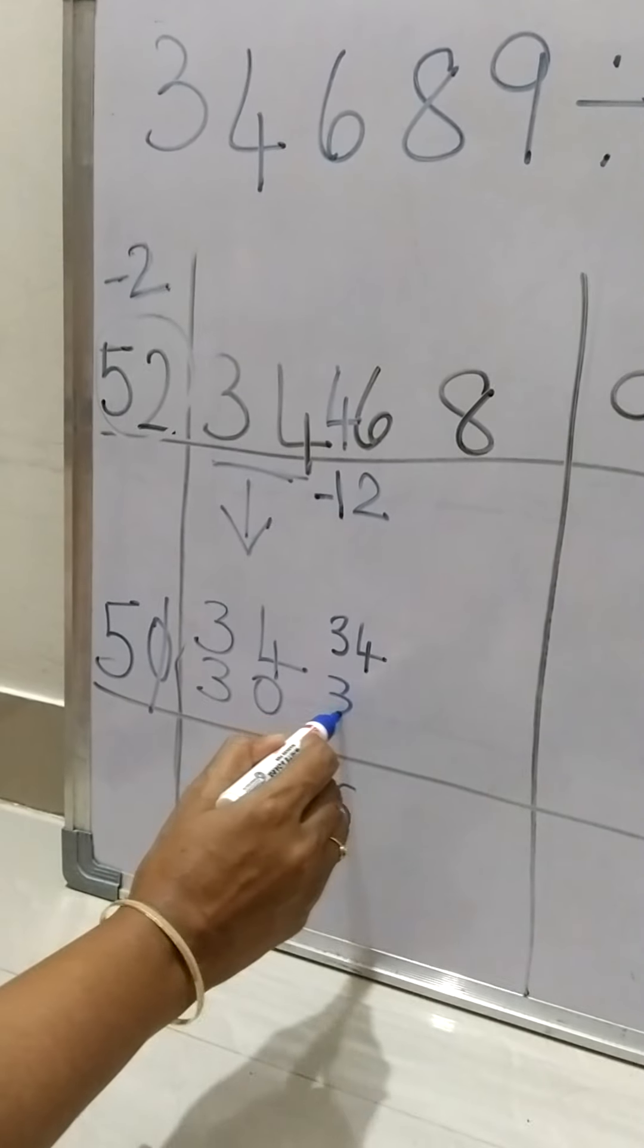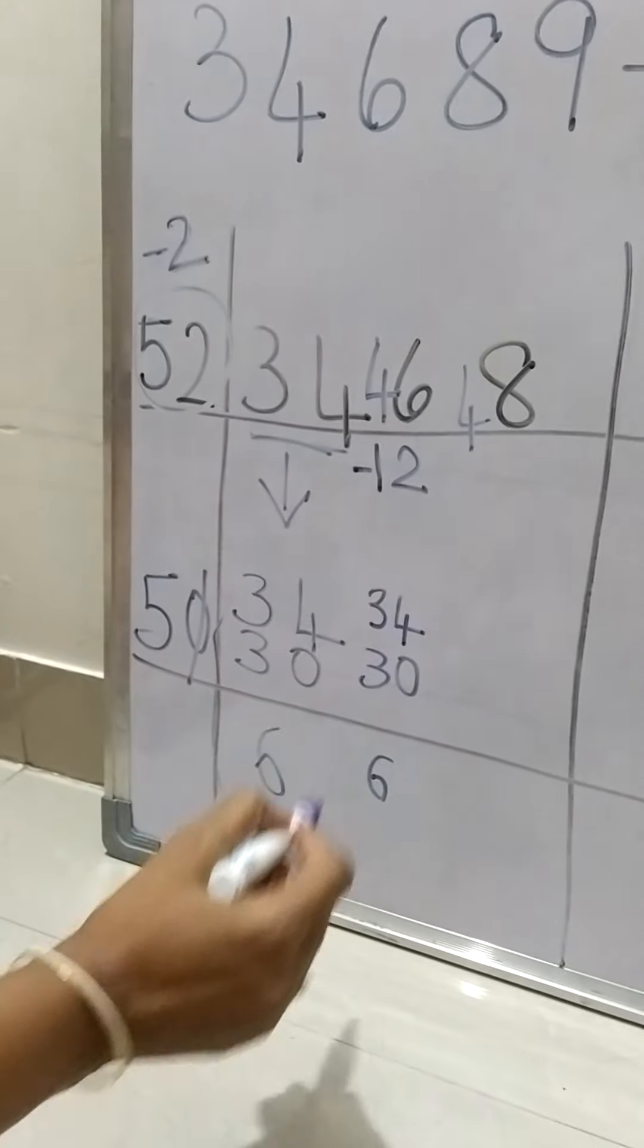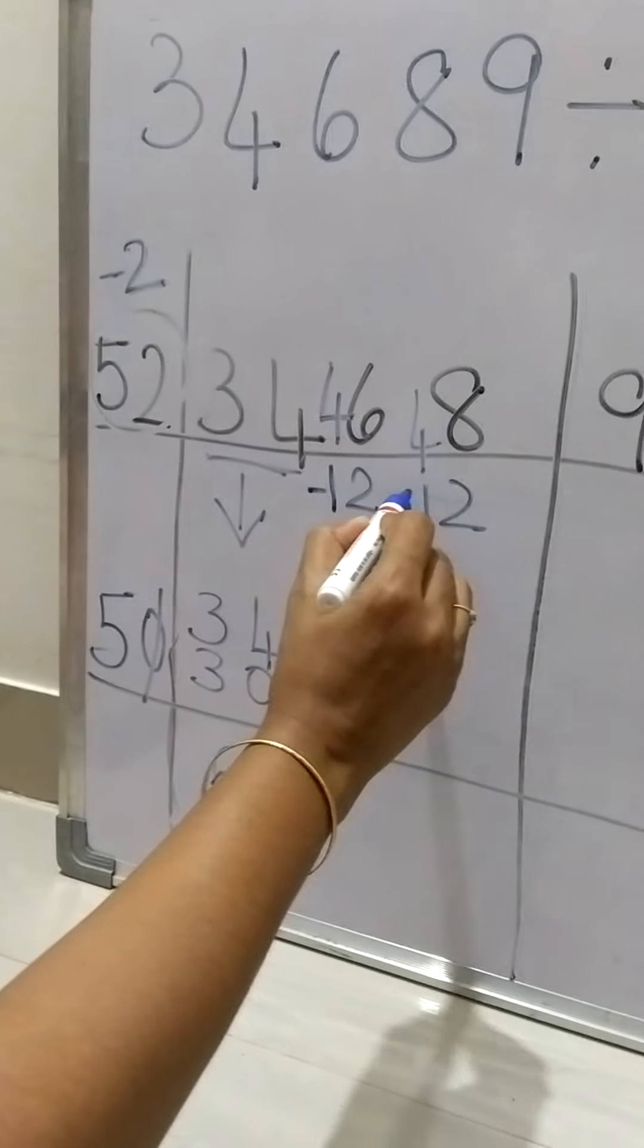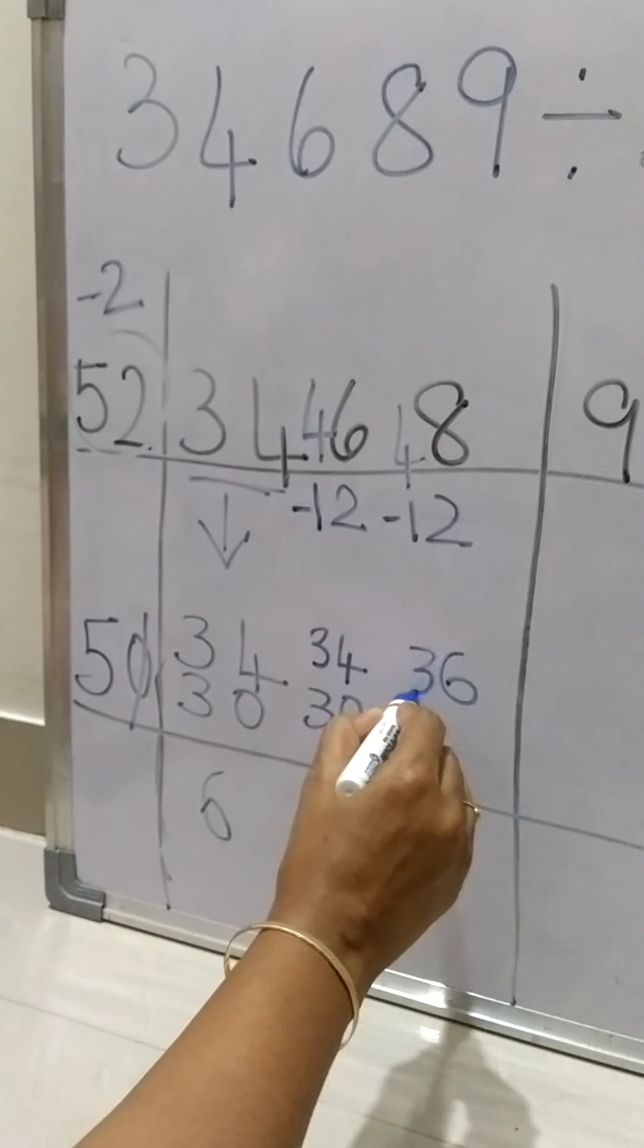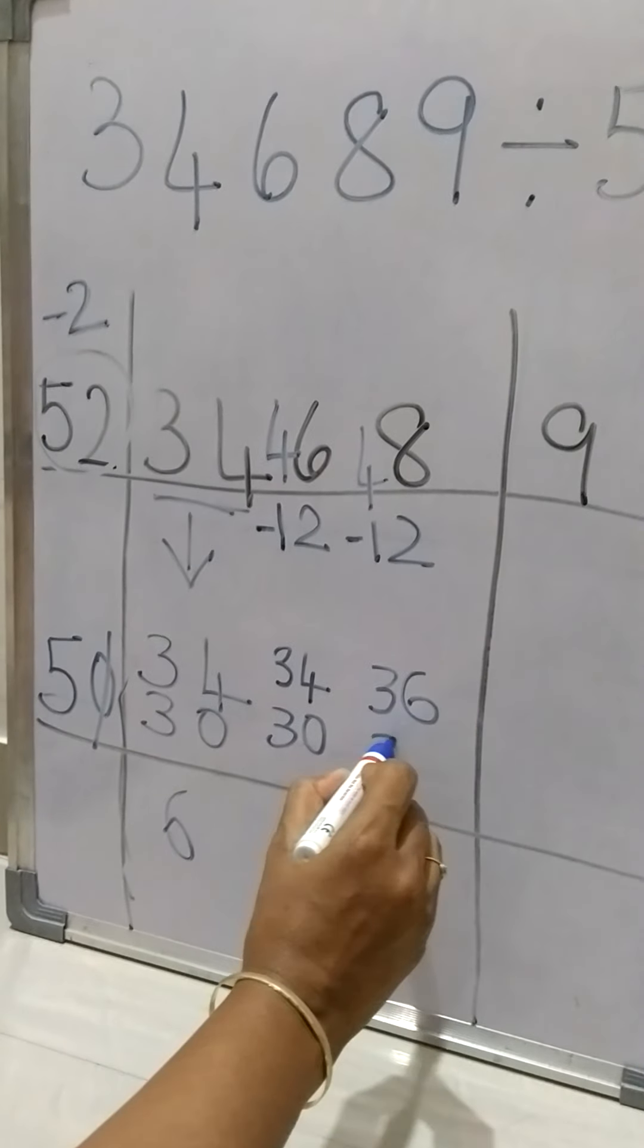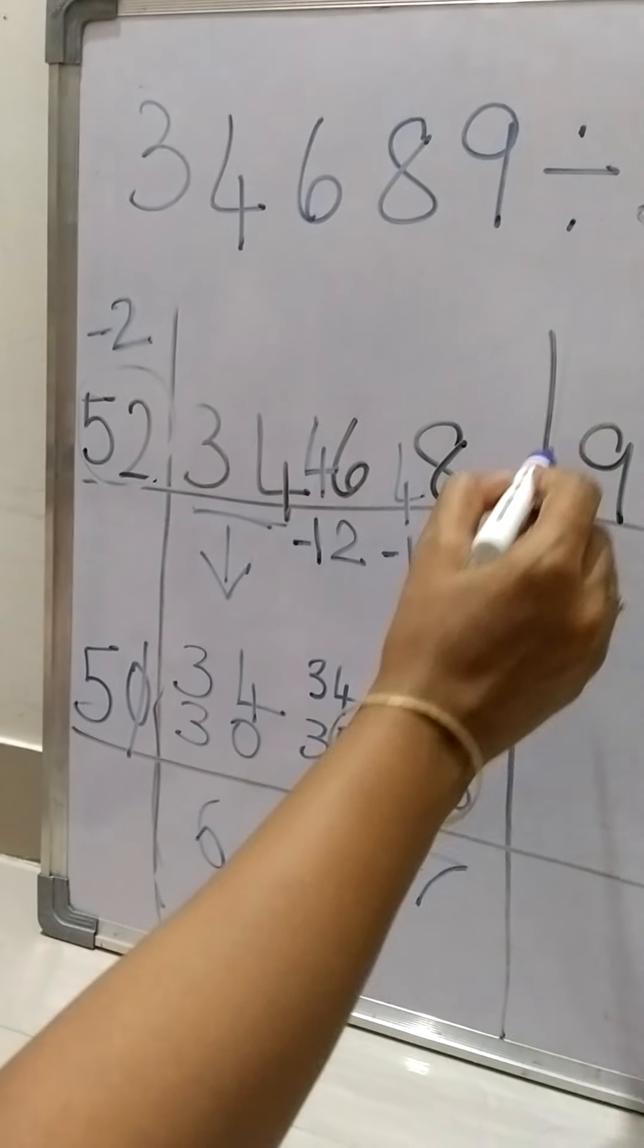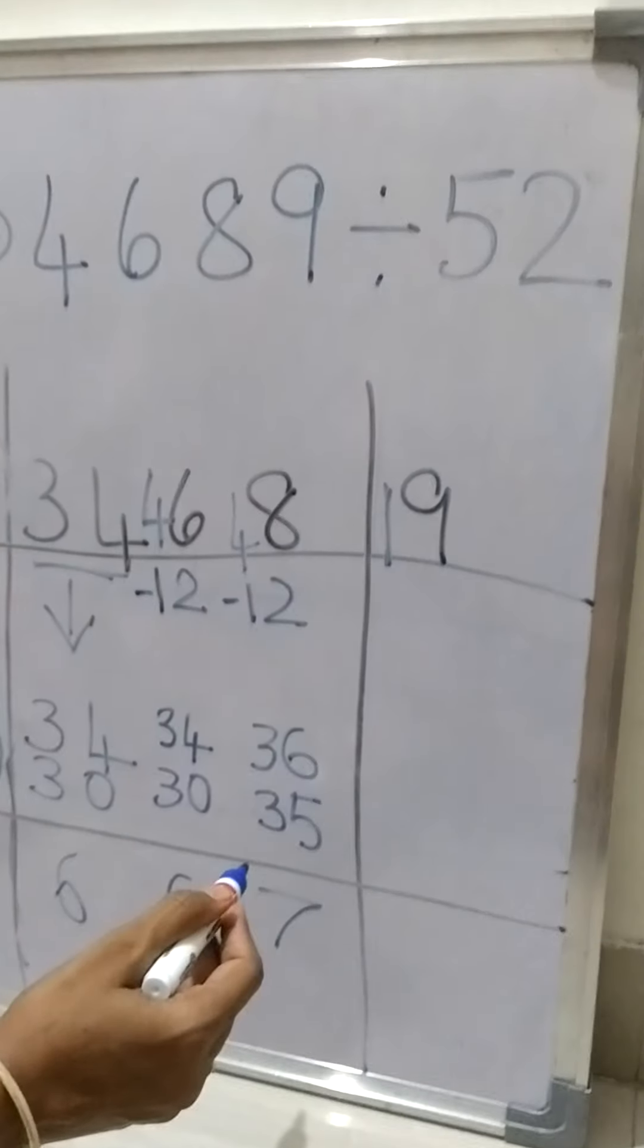Now we need to divide it by 5, that is 6, again 30. We are going to take 48. Now 6 times 2 is again 12, minus. So our answer will be 36. Again we will take 7, that's 35, we're going to do minus, then we'll get 1. We're going to mark this as the remainder.